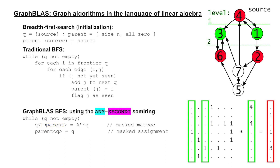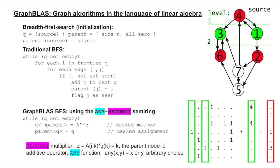We use the any-second-i semi-ring for the BFS instead of the conventional plus-times. The multiplicative operator, second-i, returns the row index k with a candidate parent node ID. The additive operator is the any function which picks any valid parent.